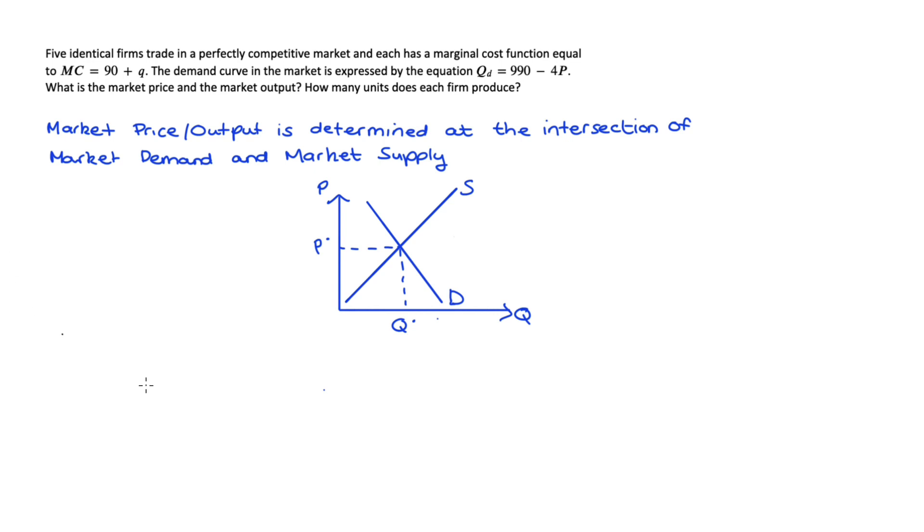Now in our question we have an equation for market demand but we don't have an equation for market supply and we need that to find out equilibrium price and quantity so that's the first thing that I'm going to do. Let's call the amount that our market supplies big Q subscript s and this amount will be equal to the sum of what our individual firms supply.